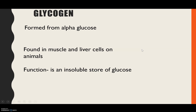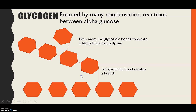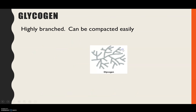Next is glycogen, also formed from alpha glucose. This time it's found in animals, inside muscle and liver cells, and its function is also an insoluble store of glucose. Glycogen looks incredibly similar to amylopectin — it has 1 to 4 glycosidic bonds and 1 to 6 glycosidic bonds. One key difference is that glycogen has even more 1 to 6 glycosidic bonds compared to amylopectin, making it a highly branched polymer. It can still be compacted, so you can fit large amounts of glucose in a small space.